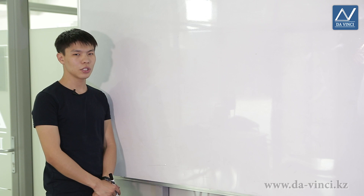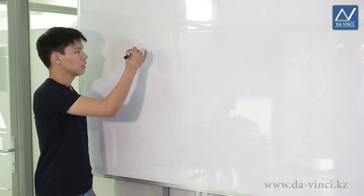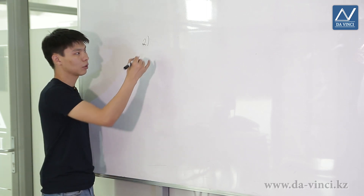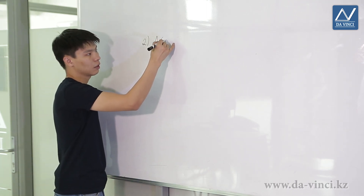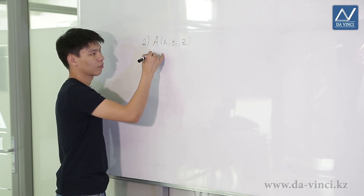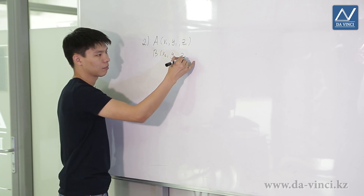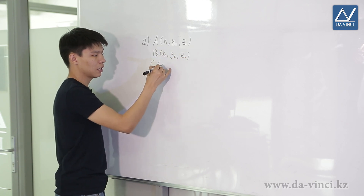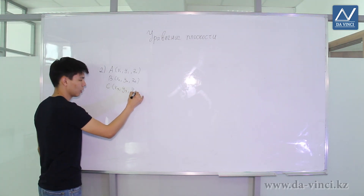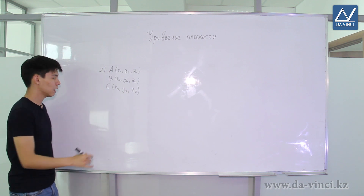As we know from school, a plane passes through 3 points that don't lie on the same line, and only one plane. So we can derive a plane knowing only 3 of its points. Let's have 3 points: A with coordinates x1, y1, z1; B with coordinates x2, y2, z2; and C with coordinates x3, y3, z3. It is required to write the equation of a plane which passes through these 3 points.